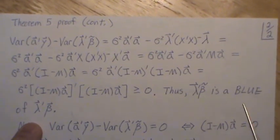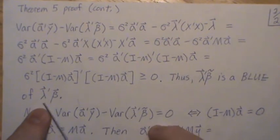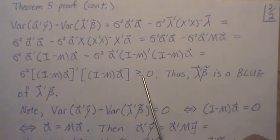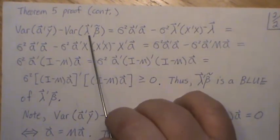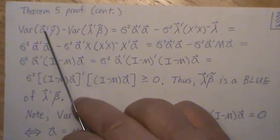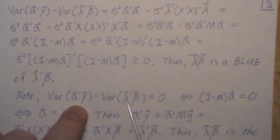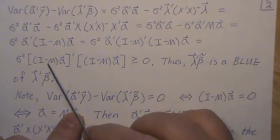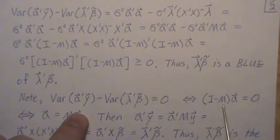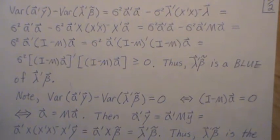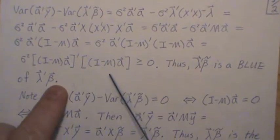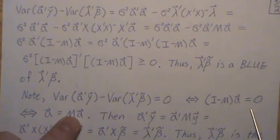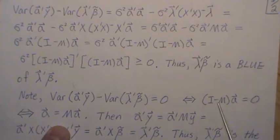Let's look at where it equals. Let's say that these two variances are equal. What does that tell us about a prime y? Note that when these two are equal, that says this vector has to be zero, because if you're adding squared things, the only way that you can add to zero is if each component is zero. So this vector has to be zero. We can multiply the M in and then add the M over to get a equals M a.